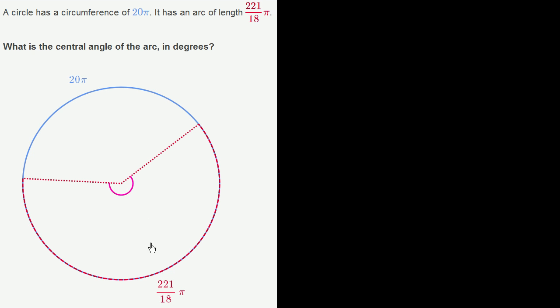So we just have to remind ourselves that the ratio of this arc length to the entire circumference—let me write that down—the ratio of this arc length, which is 221 over 18π, to the entire circumference, which is 20π,